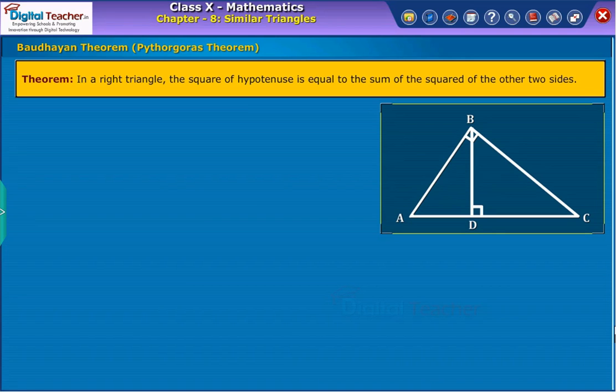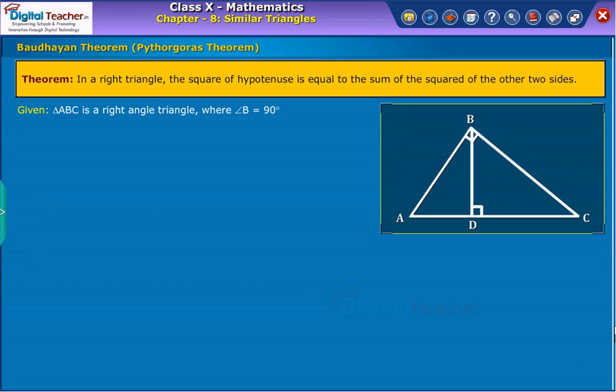Here, Pythagoras theorem states that in a right triangle, the square of hypotenuse is equal to the sum of the squared of the other two sides. Given that triangle ABC is a right angle triangle, where angle B is 90 degrees. We need to prove that AC square is equal to AB square plus BC square.